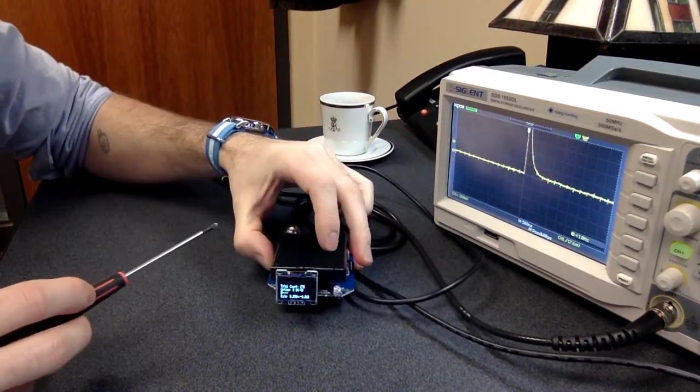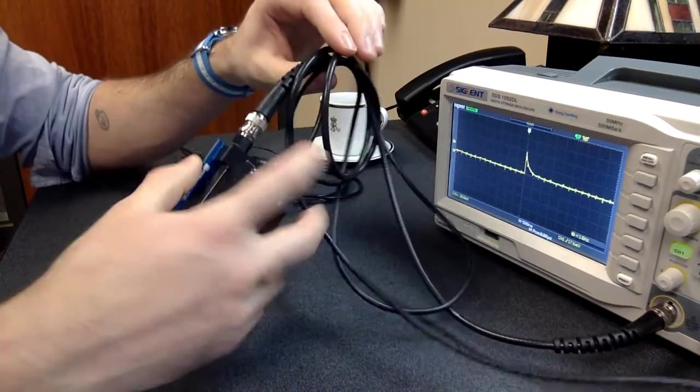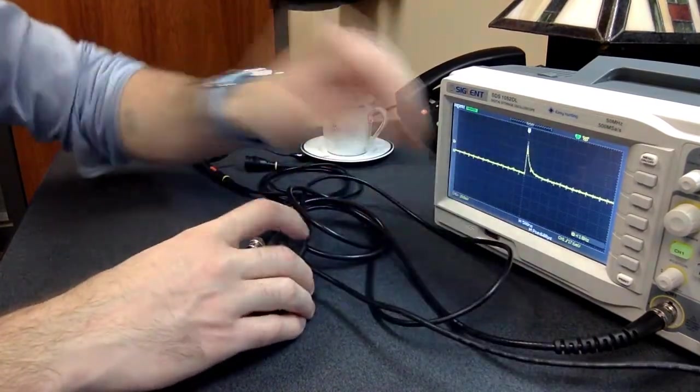I have it plugged into an oscilloscope through the BNC cable at the back, or the BNC jack receptacle at the back. Okay, and it's just plugged into channel one.